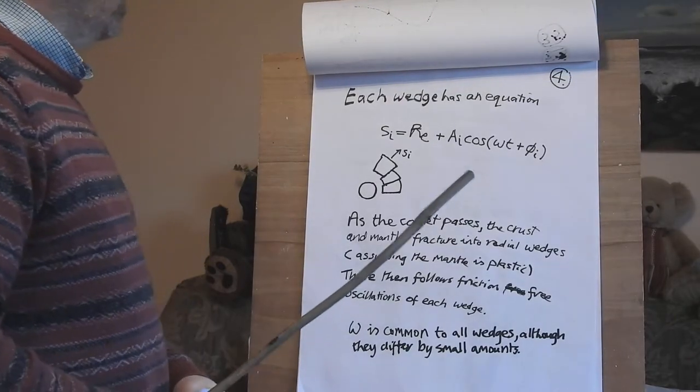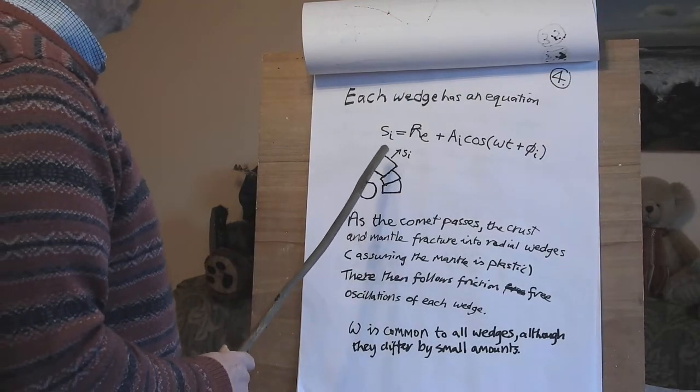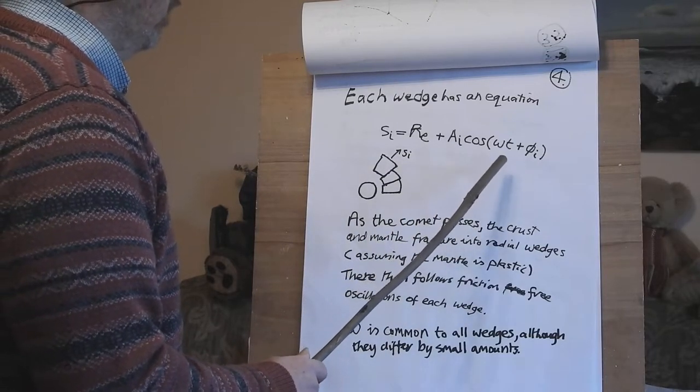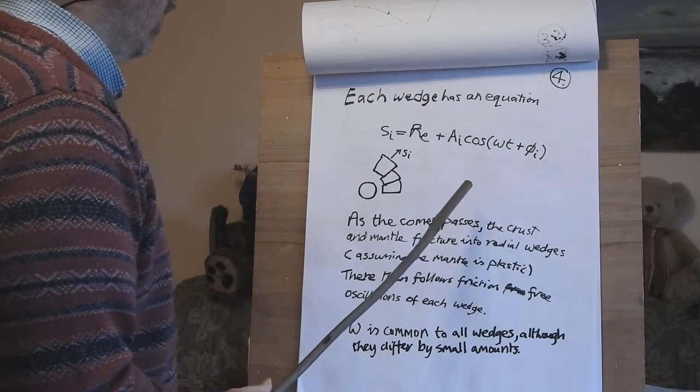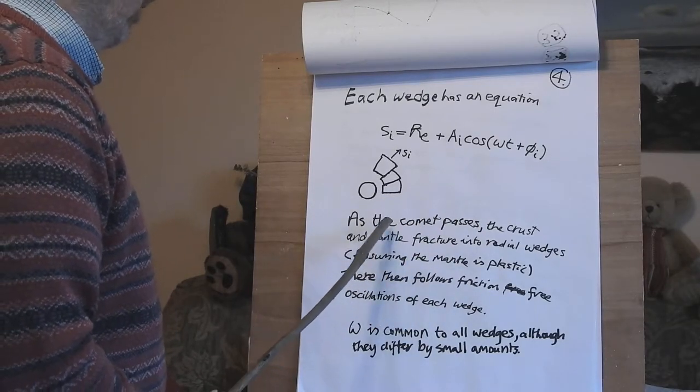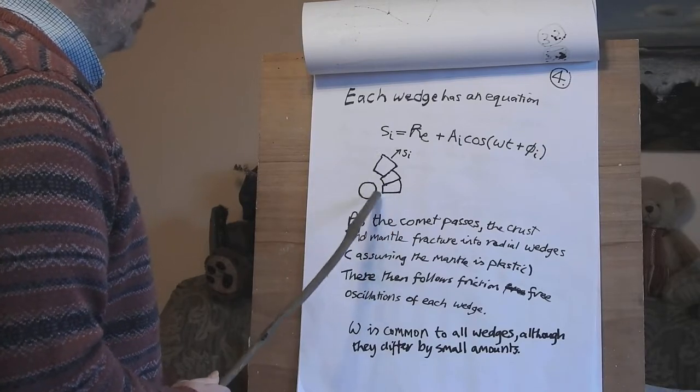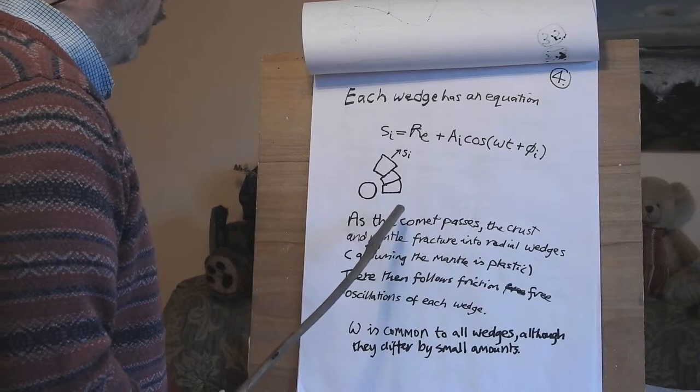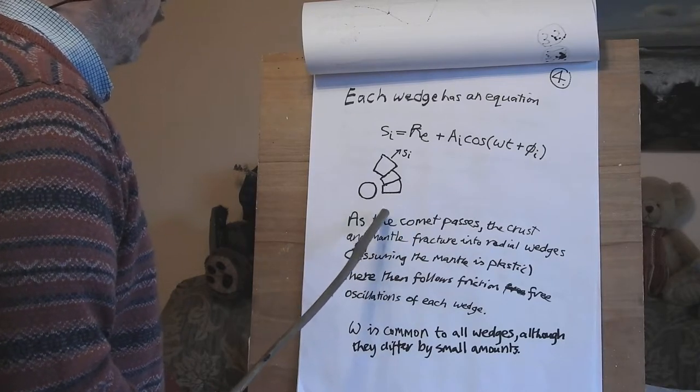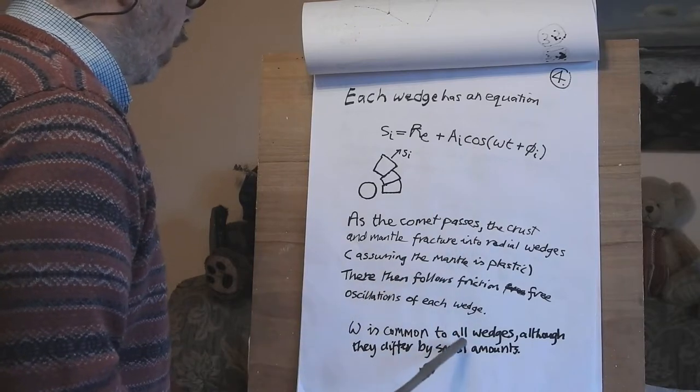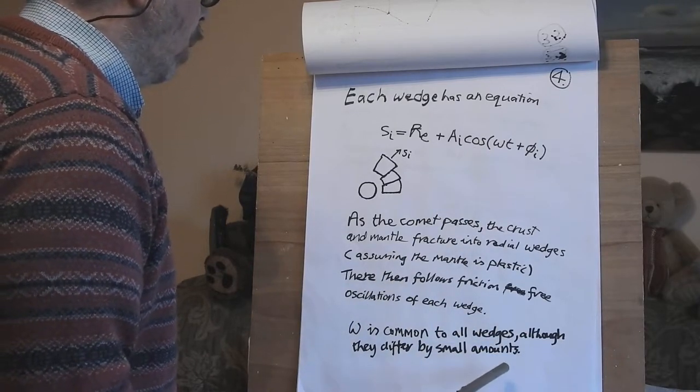So each wedge has an equation, the displacement equals radius of the earth plus a at a cos omega t plus a phase angle. As the comet passes, the crust and mantle fracture into radial wedges, assuming the mantle is plastic. There then follows friction free oscillations of each wedge. Omega here is common to all wedges although they differ by small amounts.